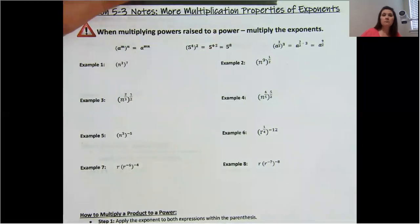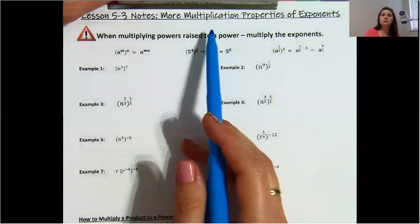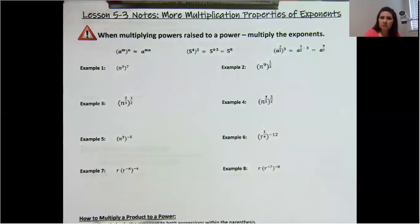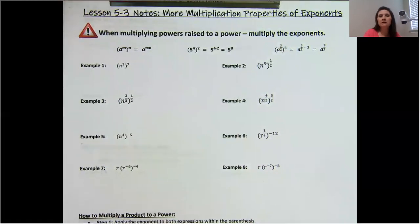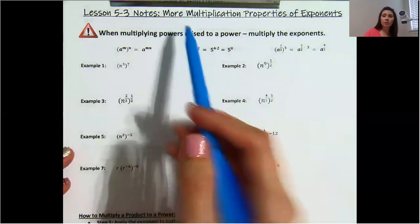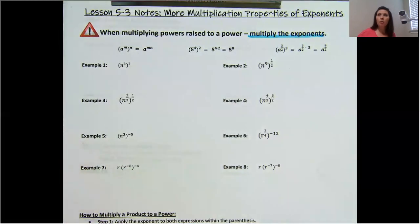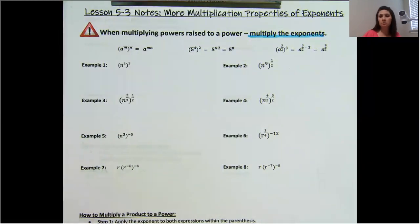We are just continuing from topic 5-2, multiplication properties of exponents. So now we just have more multiplication properties of exponents. There are so many variations of how to work with exponents that we had two lessons on it. Whenever you multiply powers that are raised to a power, you're multiplying the exponents. When we are multiplying with exponents generally, remember we add those exponents together, but anytime you have an exponent raised to an exponent, you have to multiply them.